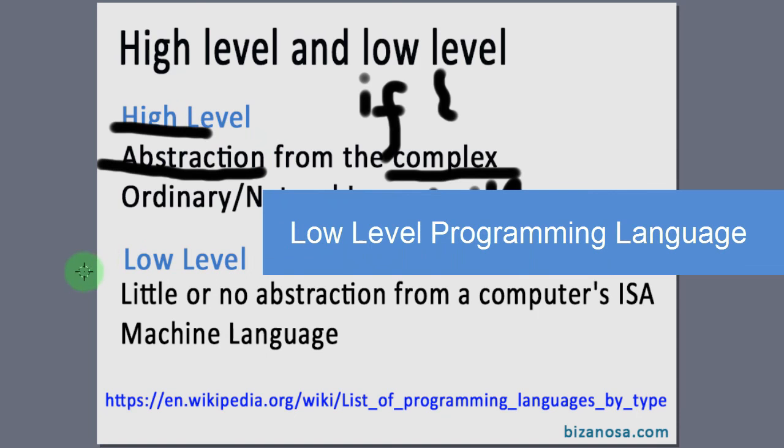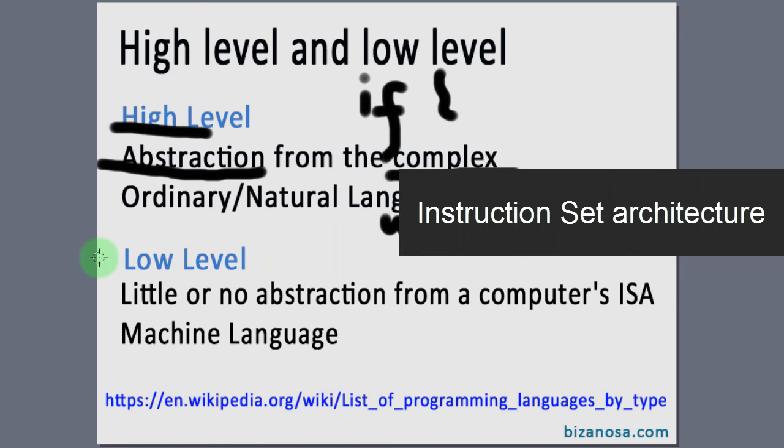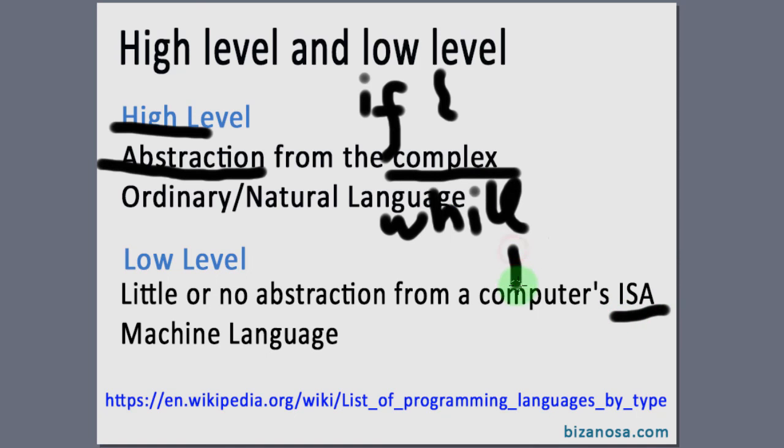Low level languages give little or no abstraction from a computer's instruction set architecture. The ISA in a computer, the instruction set architecture, is a part of the computer that handles the programmatic things. For example, if you install something and try to access it, it is that part of the computer that will handle this.